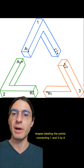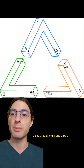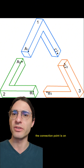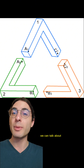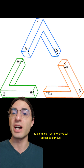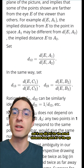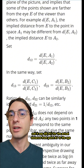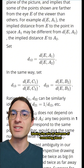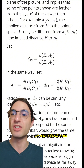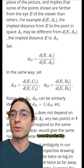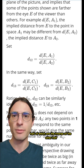Labeling the points connecting 1 and 2 by A, 2 and 3 by B, and 1 and 3 by C, and then giving an additional label of the number the connection point is on, we can talk about the distance from the physical object to our eye — call it DEA1 for the actual distance from point A1 to the eye. Then, labeling the ratio of distances of connecting pieces — say DEA1 over DEA2 by D12 and the other ratios accordingly — we now have six ratios, half of which are the inverse of the other half.